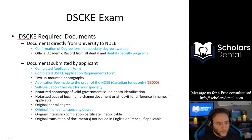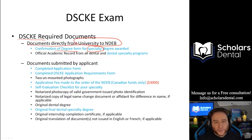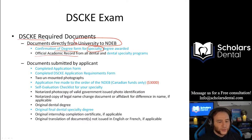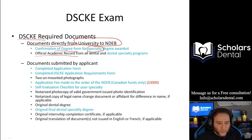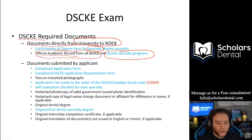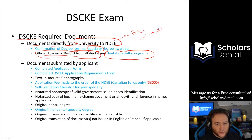What are the required documents for a DSCKE? There are documents needed directly from the university to the NDEB — just like the confirmation degree, but there's a specific specialty one. You need your official academic records: your dental degree, dental transcripts sent directly from the university, and your dental specialty degree and dental specialty transcripts. If you've already been approved by the NDEB for the general dentistry part, you'll need to add on the dental specialty degree and its transcripts.